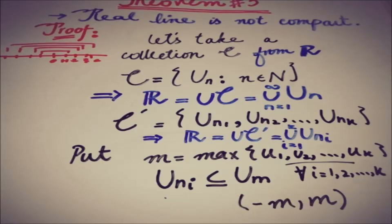As if we take the union of all of the Uni, that is ℝ by our assumption that C' is the finite subcover, we can write again, by taking union on both sides, this will be ℝ and this will be Um, where Um is from minus m to m, an open interval.